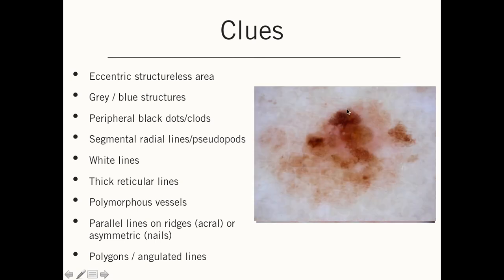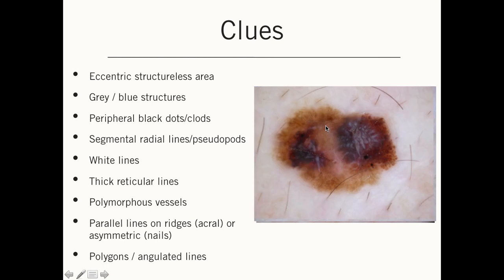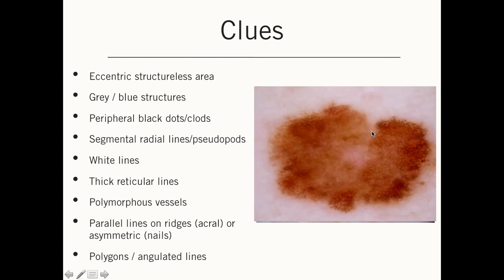Here we have black clots and dots that are eccentric — those are a clue to malignancy. Here we have radial lines, but they are only in a segment of the lesion; they do not anchor around the whole circumference, just a segment — and because of this, it is a clue to malignancy. Here we have white lines, and most commonly they will present as perpendicular white lines, seen by polarized dermatoscopy. Thick reticular lines are a more difficult clue — when the lines themselves are thicker than the holes in between, that counts as a clue to malignancy.